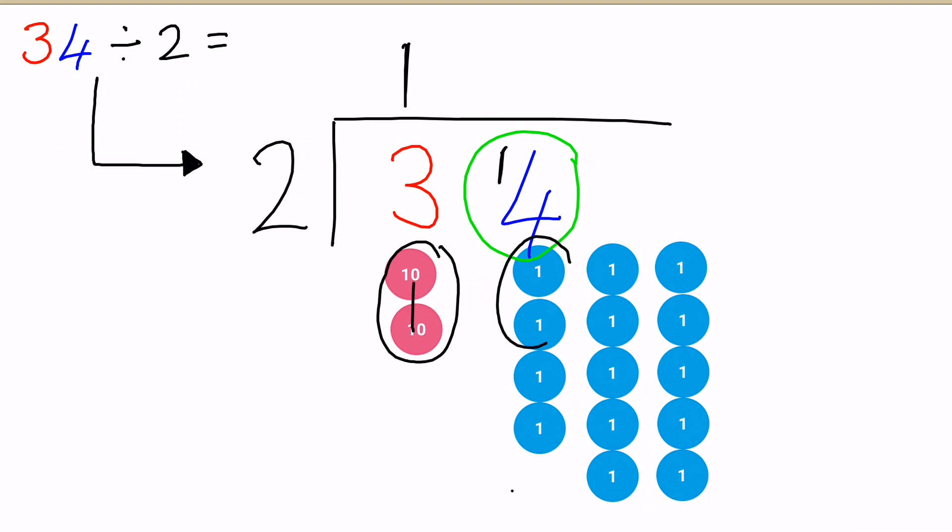We've got 1, 2, 3, 4, 5, 6, 7 groups of 2. So we would write that like this, which tells us that 34 divided by 2 equals 17.